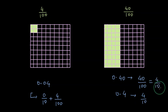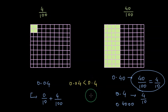40 by 100 and 4 by 10 are equivalent fractions. Therefore 0.4 is basically 0.40 or 0.400 or 0.4000, and we can conclude that 0.04 is less than 0.4 quite clearly.